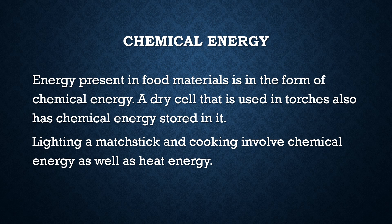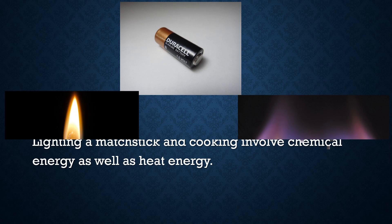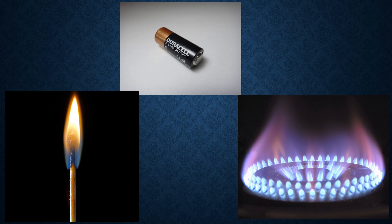Chemical energy: the energy present in food materials is in the form of chemical energy. A dry cell used in a torch also has chemical energy stored in it. Lighting a matchstick and cooking involves chemical energy as well as heat energy. Examples of chemical energy include a burning matchstick, a gas burner, and a dry cell.